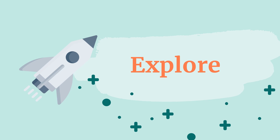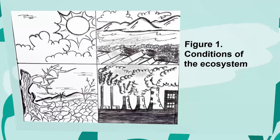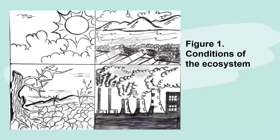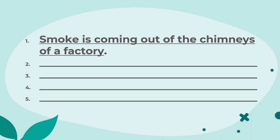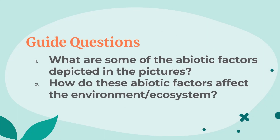Explore. Perform this next activity entitled Let Me Know. From the pictures in Figure 1, write at least 5 observations in your Science Activity Notebook — Number 1 is already done for you. Here is Figure 1, Conditions of the Ecosystem. Please pause the video if you need more time in observing. Here is the sample observation: Smoke is coming out of the chimneys of a factory. Answer these guide questions: 1. What are some of the abiotic factors depicted in the pictures? 2. How do these abiotic factors affect the environment or the ecosystem?